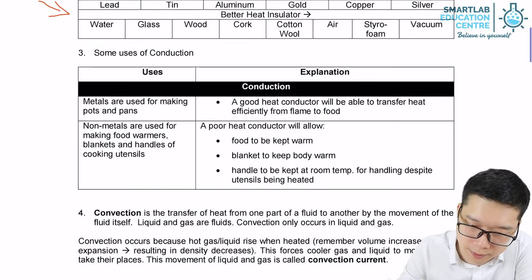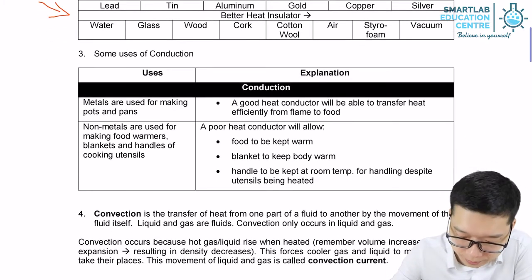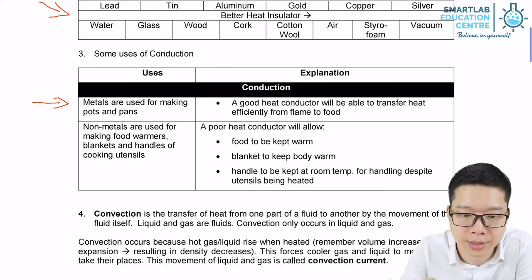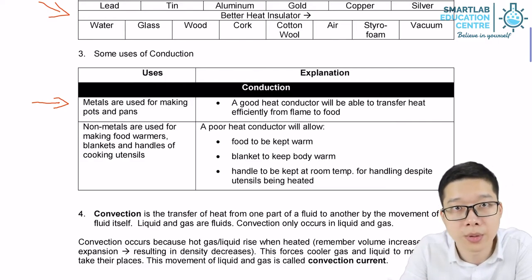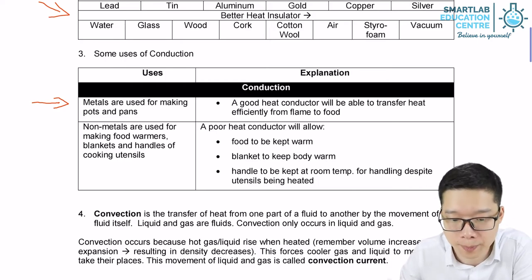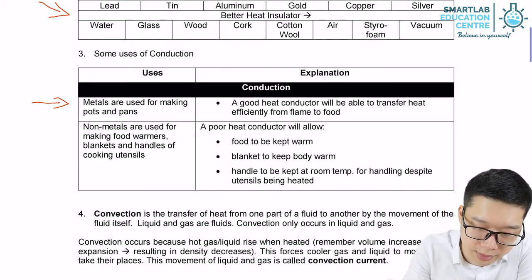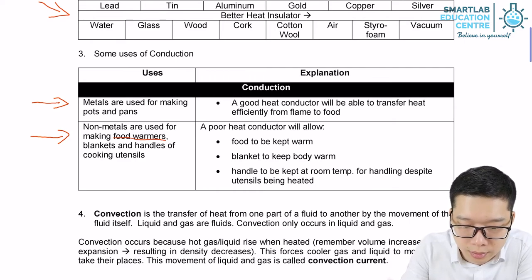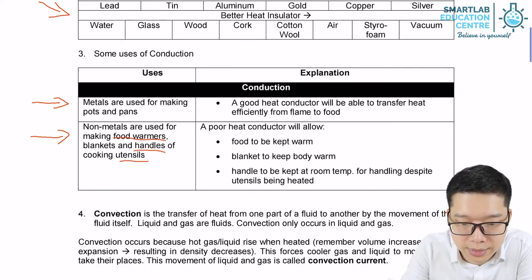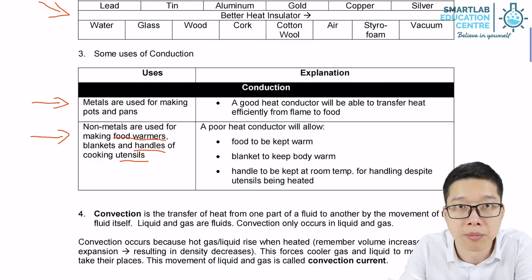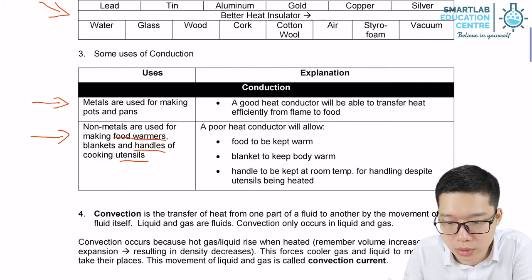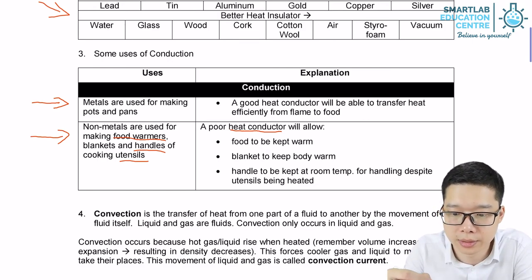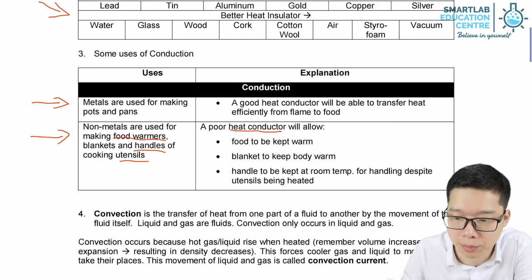So let's look at some examples of the usage of conduction. When we are cooking, if you observe in the kitchen, most of the pans and pots are made of metals so that they can conduct heat from the heat source more effectively to your food. And if you observe carefully enough, all the handles and utensils for the pot or pans will be made of plastic or wood because they are poor heat conductors or better insulators, so that when the food is hot, your hand will not be hurt.